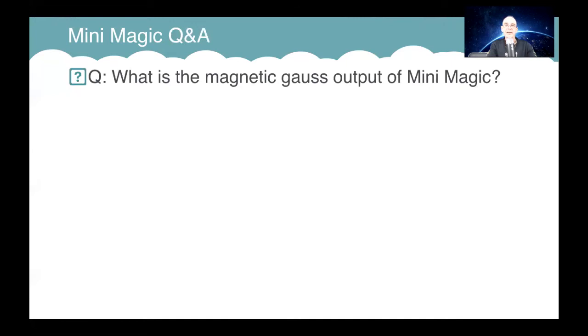Well, the Magics have got a gauss rating, and the gauss is quite high, especially for such small devices. But as I say, the gauss is applied for a very short period of time, and so the average gauss is low, but the instantaneous gauss is quite high, and the shape of that signal is next to perfect.